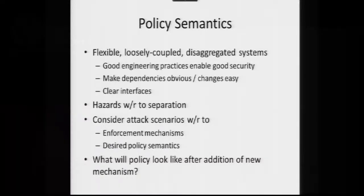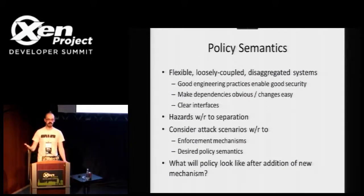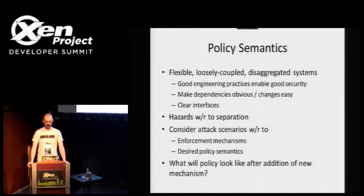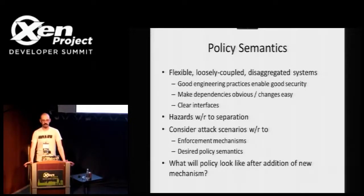The end goal would be to have policy semantics that show when the IVC channel is negotiated through XenStore — you can see the read from XenStore to get information about creating the channel, then see the channel created using grants. That would be infinitely more clear than simply having the possibility of shared memory between different domains. Good engineering practices really do enable good security for these larger systems. Things that are disaggregated with well-defined interfaces are things you can actually write a mandatory access control policy to govern in a meaningful way.